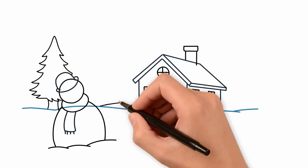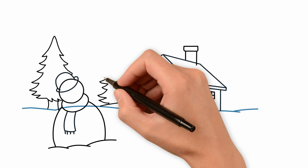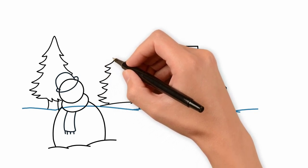On the other side of the house, we draw a Christmas tree. On the trees we draw snow. Snow lies on the branches of Christmas tree.